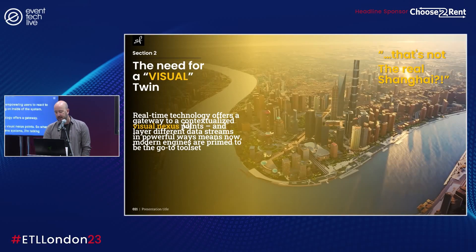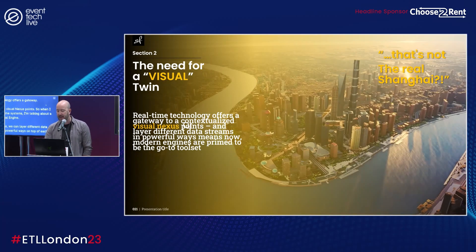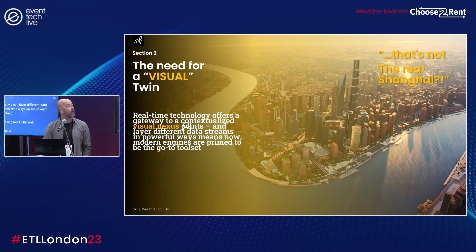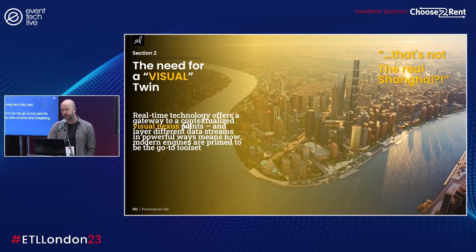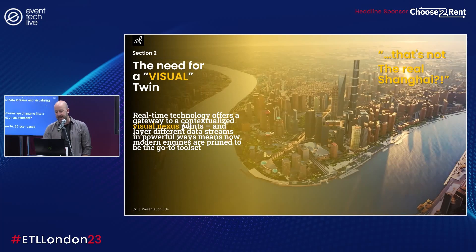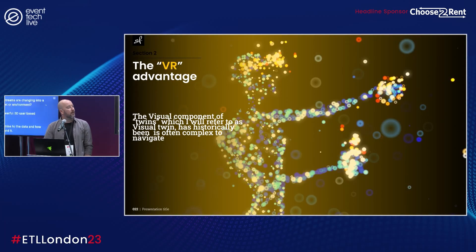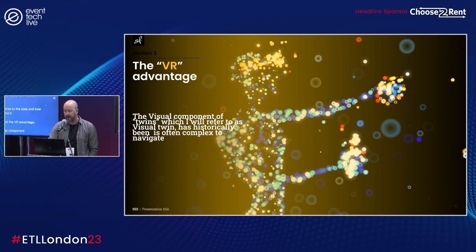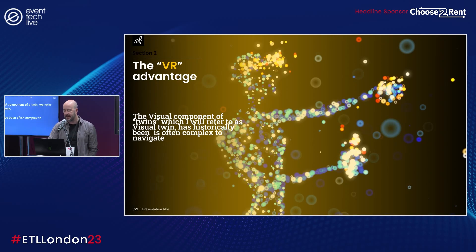Real-time technology offers a gateway to contextualize visual nexus points. When I talk about real-time systems I'm talking about Unity or Unreal Engine. In these systems we can layer different data streams in very powerful ways on top of each other to give context. Modern real-time engines like Unity and Unreal are primed to be the go-to toolsets for ingesting complex data streams and visualizing how those streams are changing into a realistic 3D model or environment, enabling powerful 3D user-based experiences with no compromise to data comprehension.